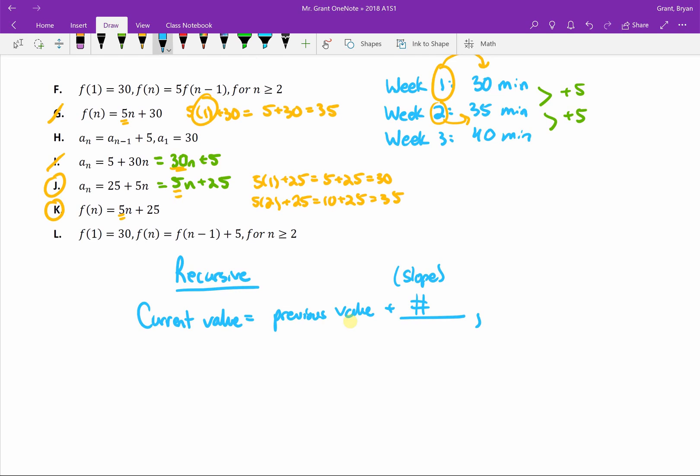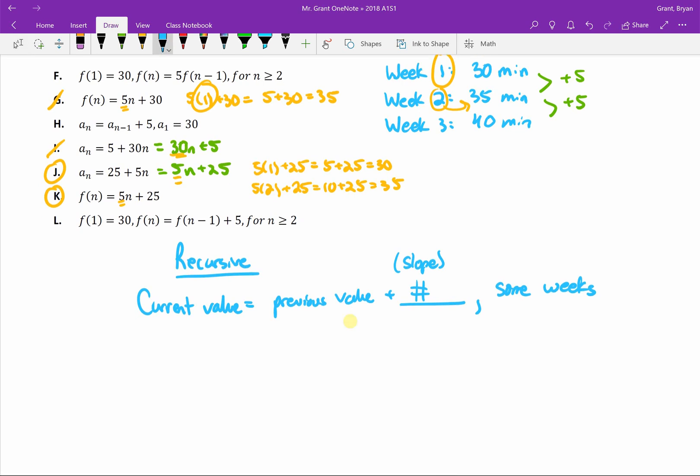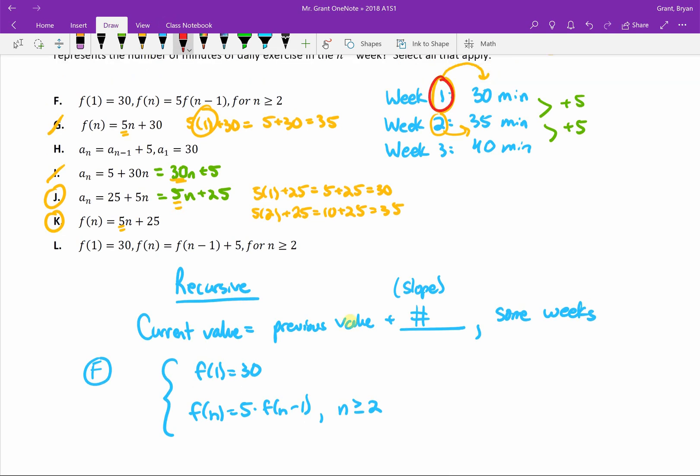This number actually ends up being the slope. Then there's going to be something at the end that says this is only allowed to be used for certain values of N, for some weeks. Let's take a look at F. If I were to write out F in a recursive format, I'd say F(1) = 30, and then F(N) = 5 × F(N-1). This equation down here is only good for N ≥ 2.